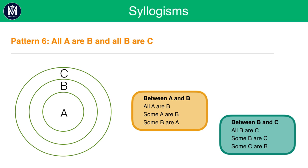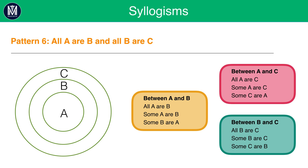Whatever relationship exists between B and C will also be true between A and C by default — since all A are B, A carries that same relationship. So between A and C: all A are C, some A are C, and some C are A. For example: 'all cities are countries and all countries are continents' — you get nested circles: continents largest, countries inside, cities smallest. All cities are continents, some cities are continents, and some continents are cities.